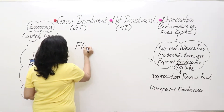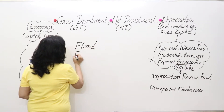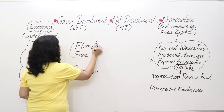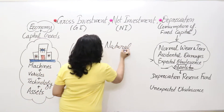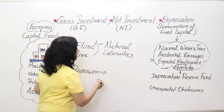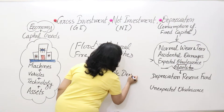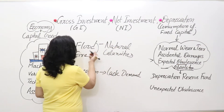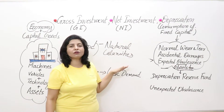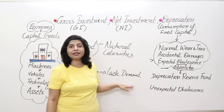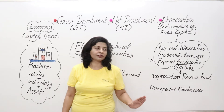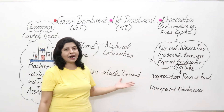For unexpected obsolescence, two reasons are: flood and fire, which are natural calamities, and recession — that is depression or lack of demand in the market. When there is a natural calamity like flood or fire, everything gets destroyed, resulting in capital loss. When there is recession, there is lack of demand, so there won't be any requirement for capital goods and they will stand still with no production. This is unexpected obsolescence.